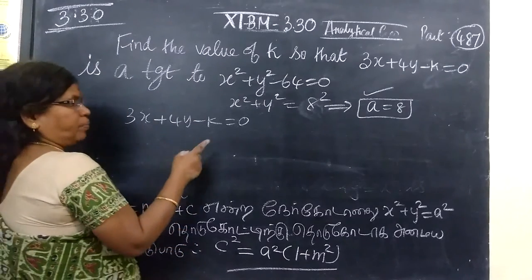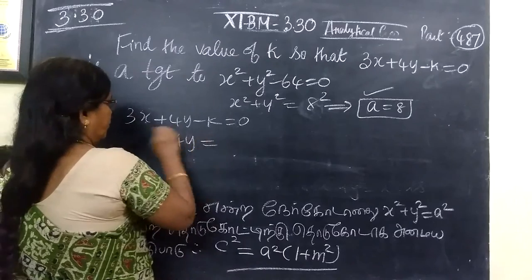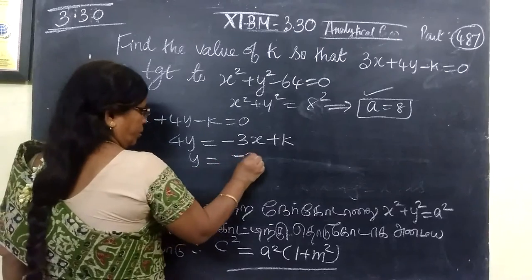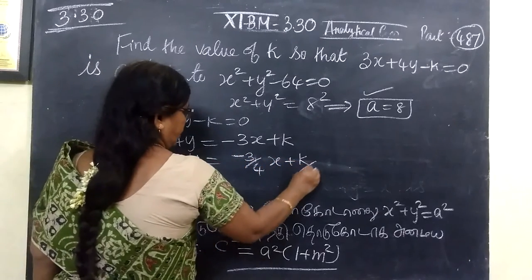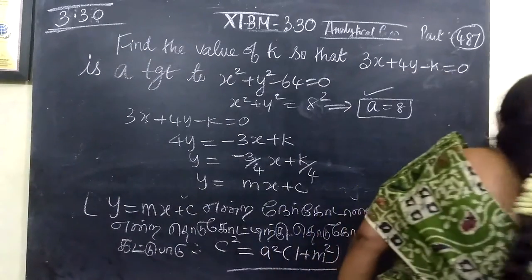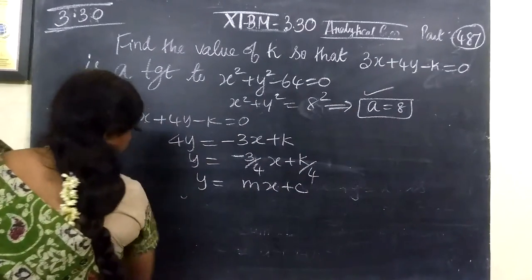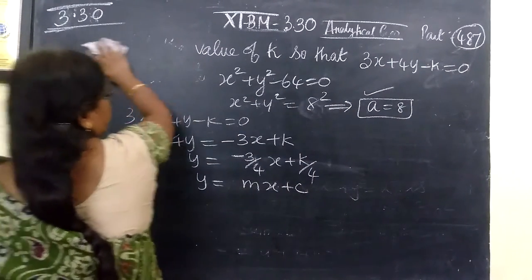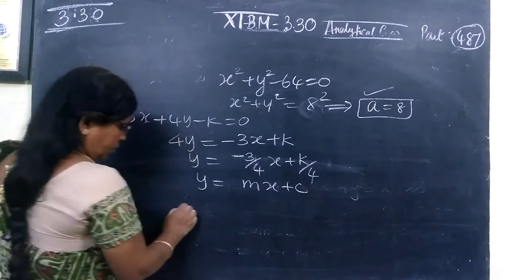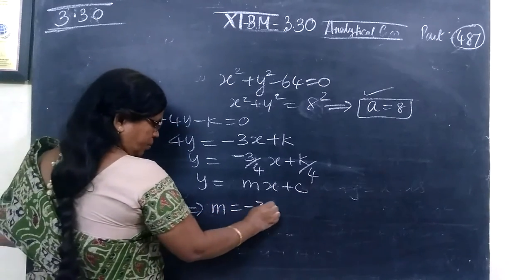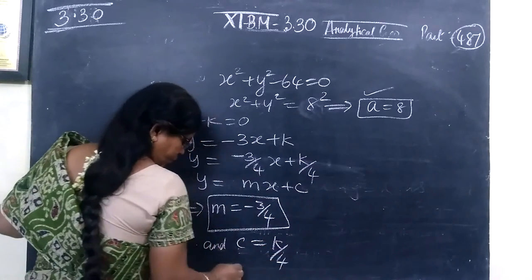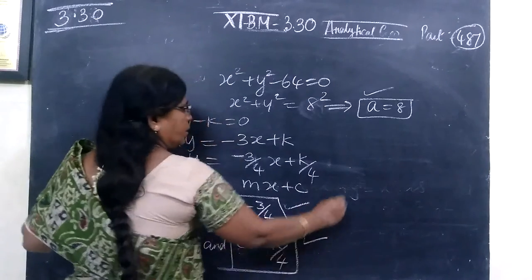Converting to the form y equal to mx plus c: from 3x plus 4y minus k equal to 0, we get 4y equal to minus 3x plus k, therefore y equal to minus 3 by 4 times x, plus k by 4. Comparing with y equal to mx plus c, we get m equal to minus 3 by 4, and c equal to k by 4.